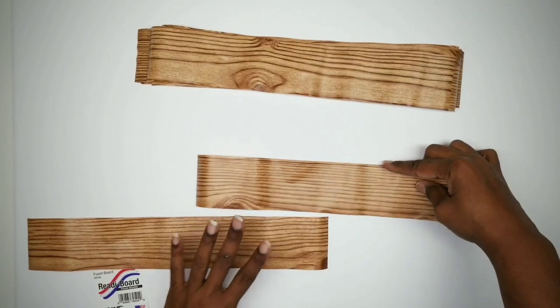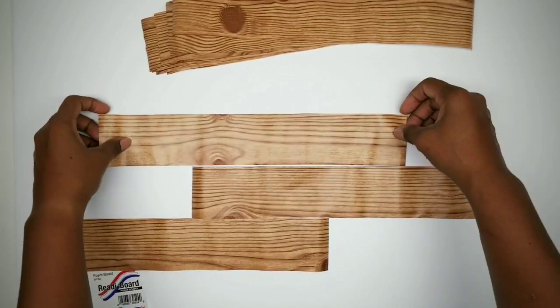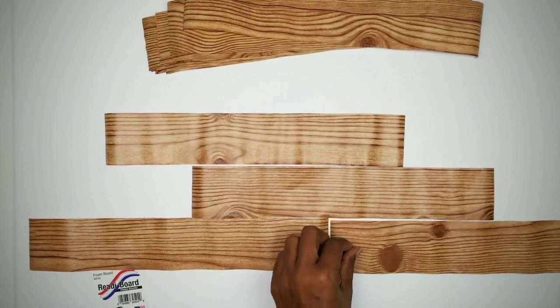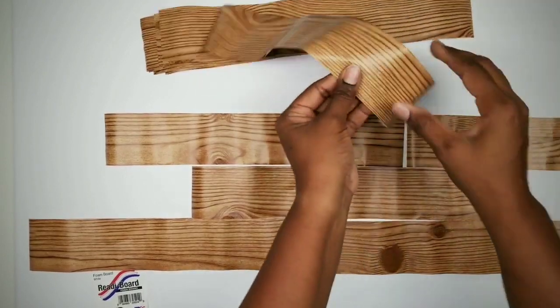Go ahead and lay out your foam board. Start arranging your planks in a pattern that you're happy with. You want to make sure that you stagger the seams to achieve a more authentic wood floor look.